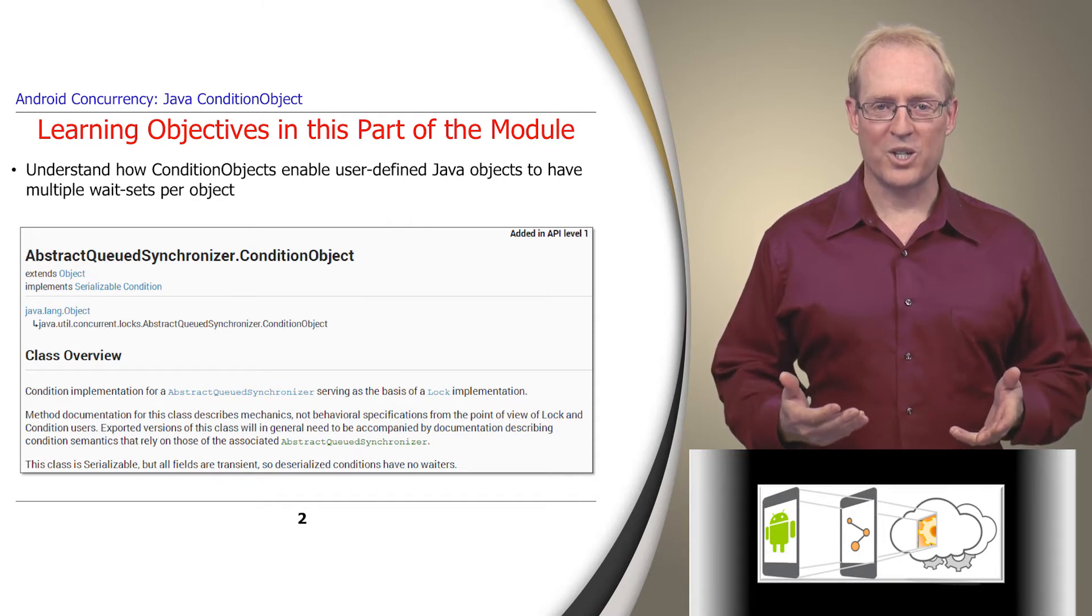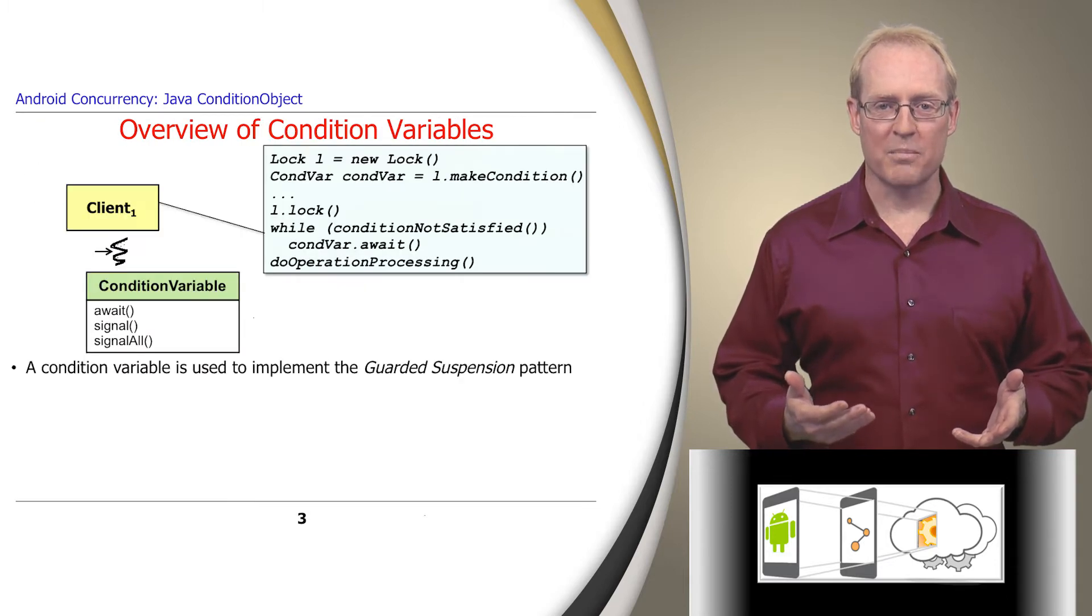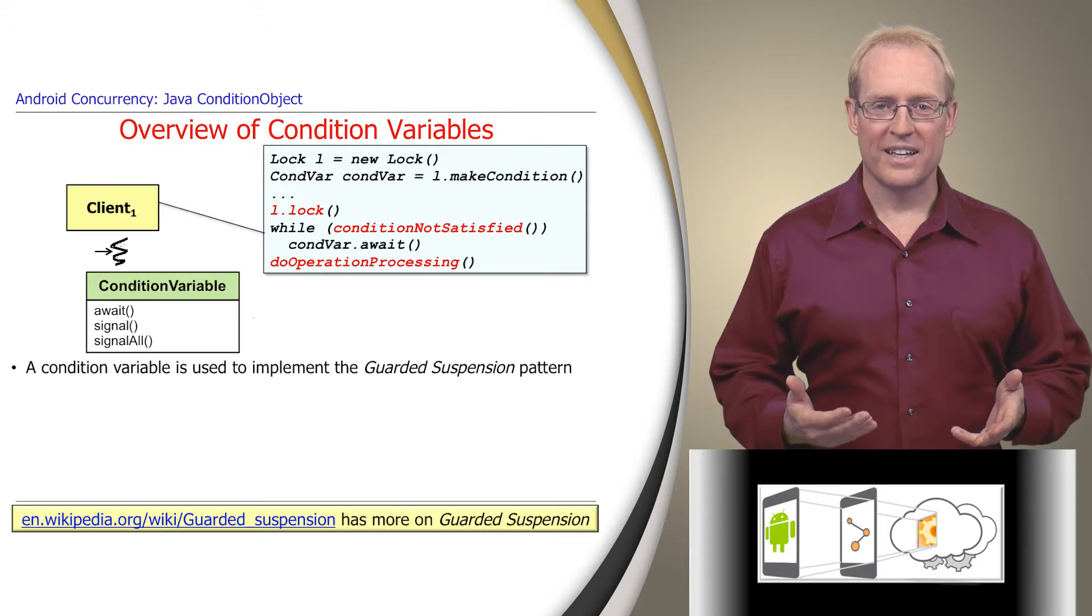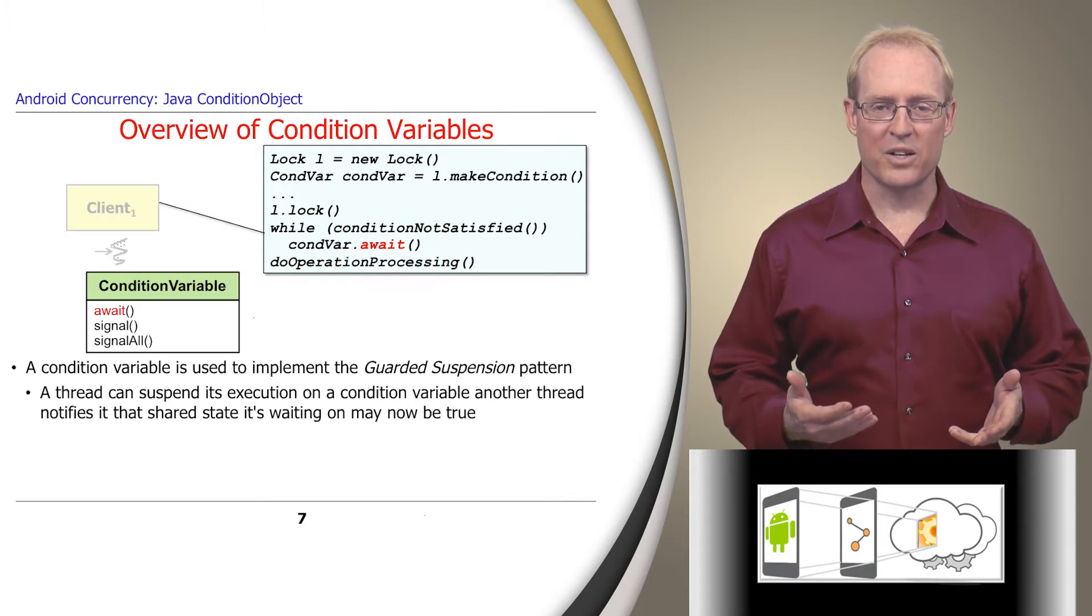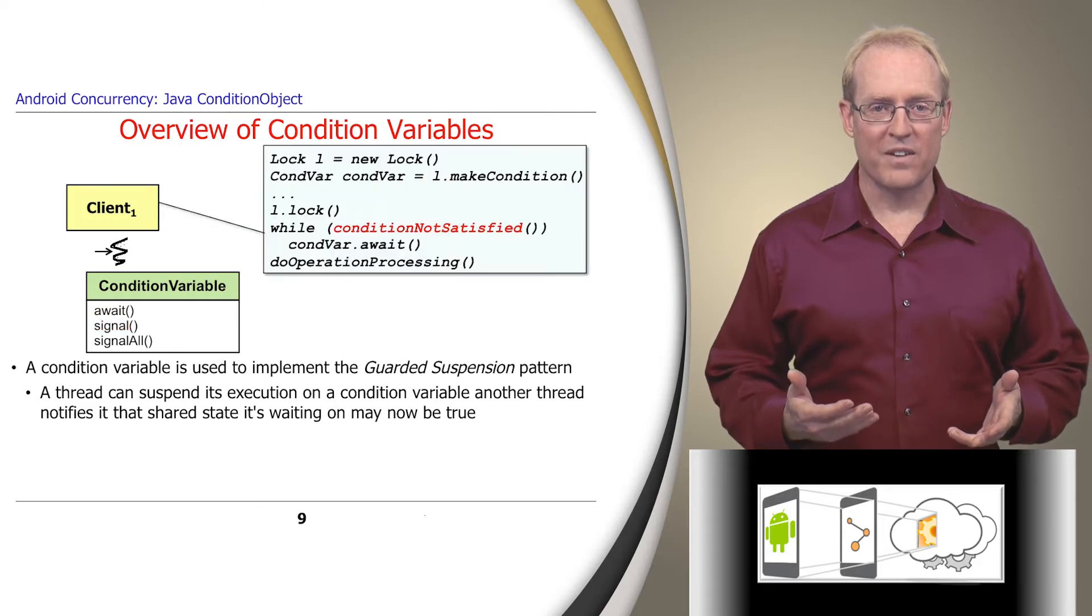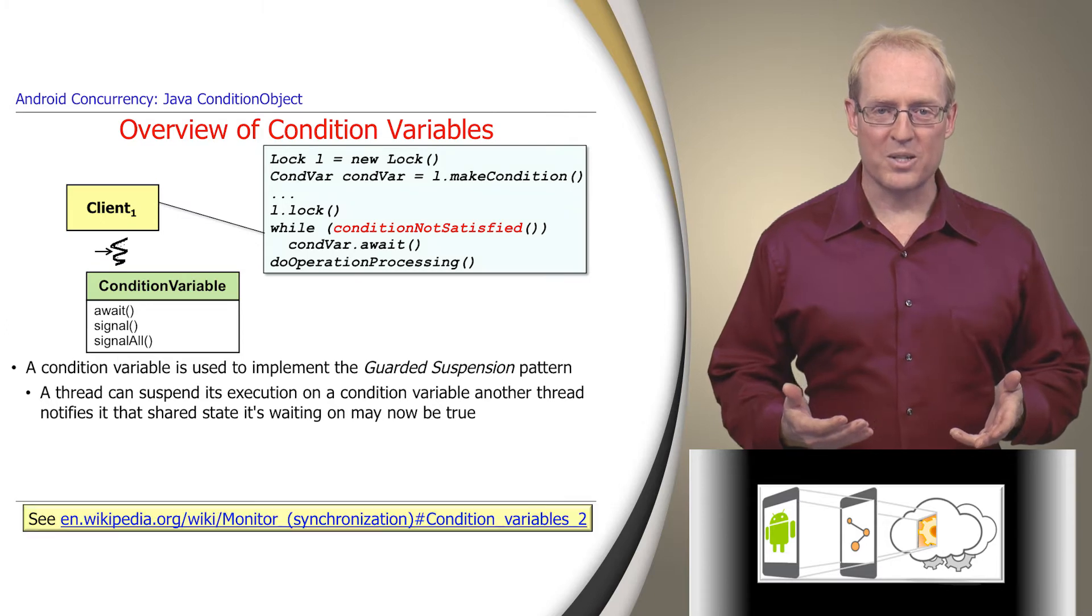It shows how condition objects are applied in Android. A condition variable is a synchronization and scheduling mechanism that's commonly used to implement the guarded suspension pattern, which requires both the acquisition of a lock and the satisfaction of a condition before an operation can be executed. A thread can suspend itself on a condition variable until another thread notifies it that a condition involving shared state it's waiting on may now be true.